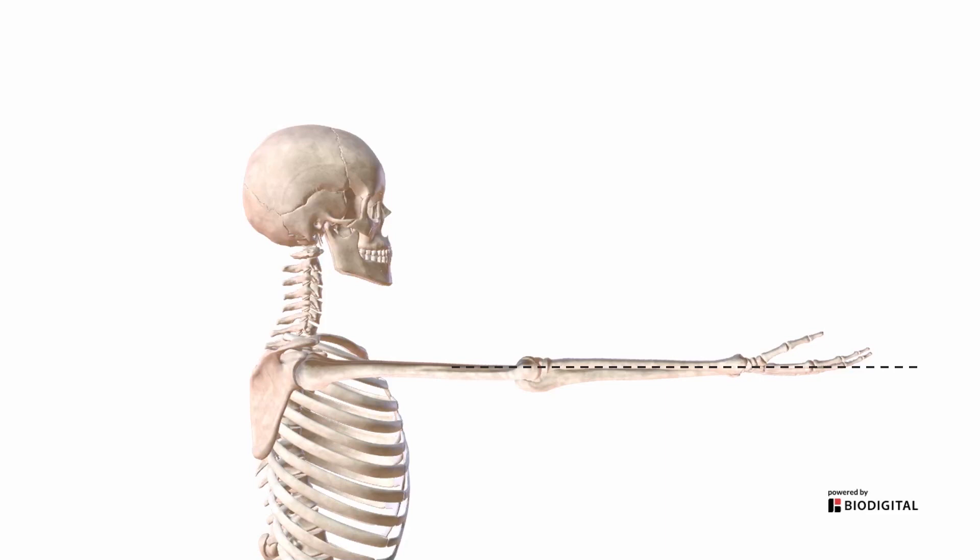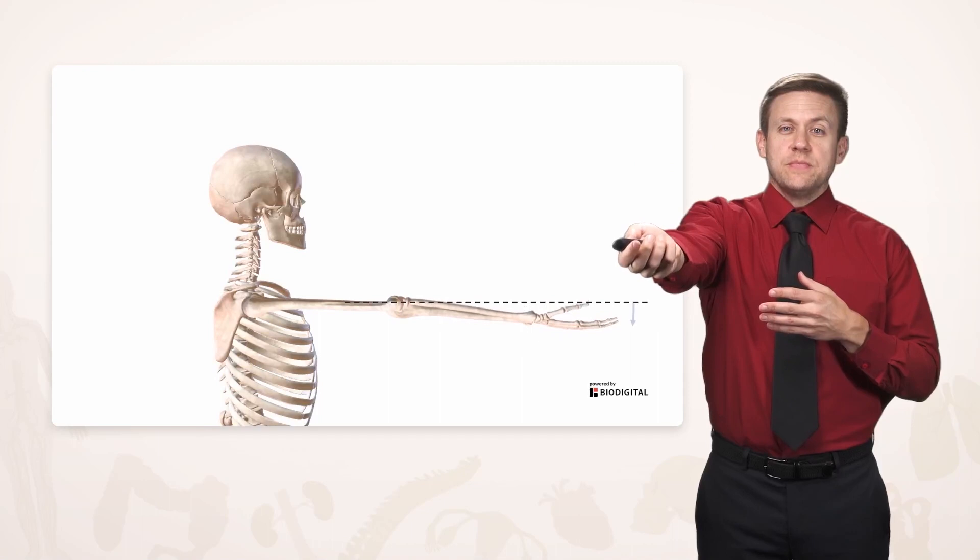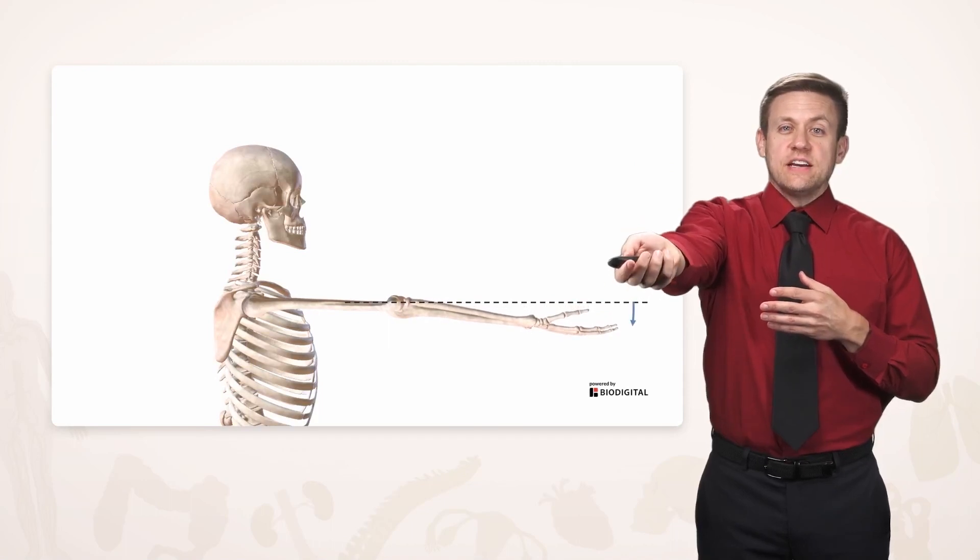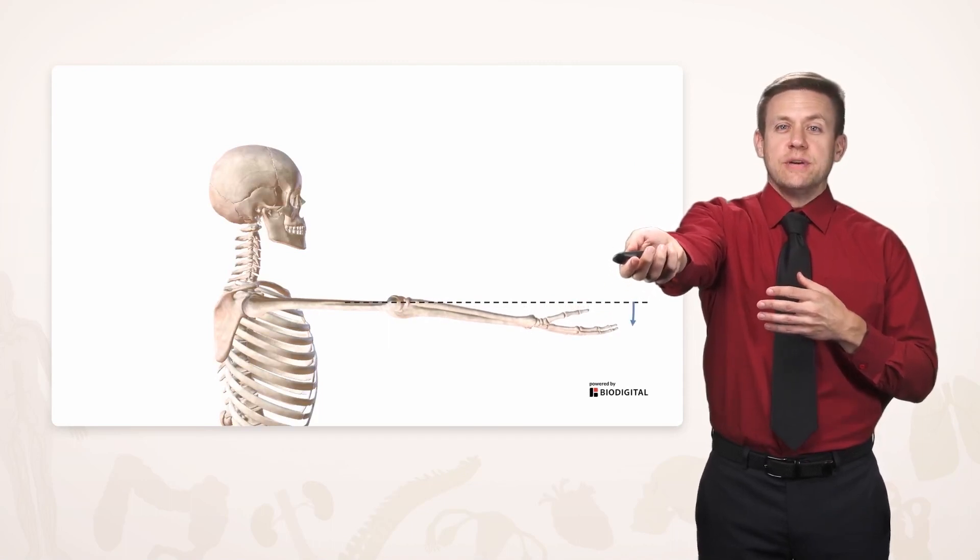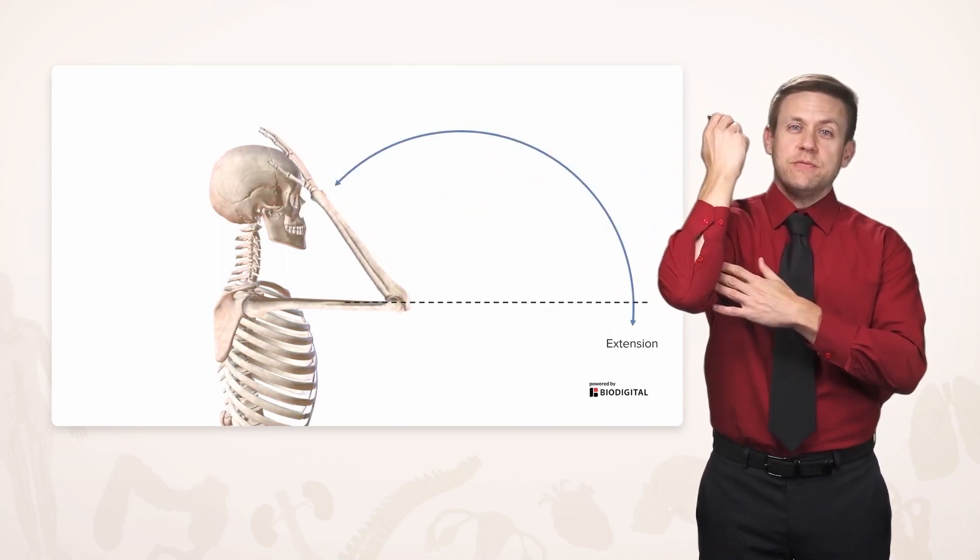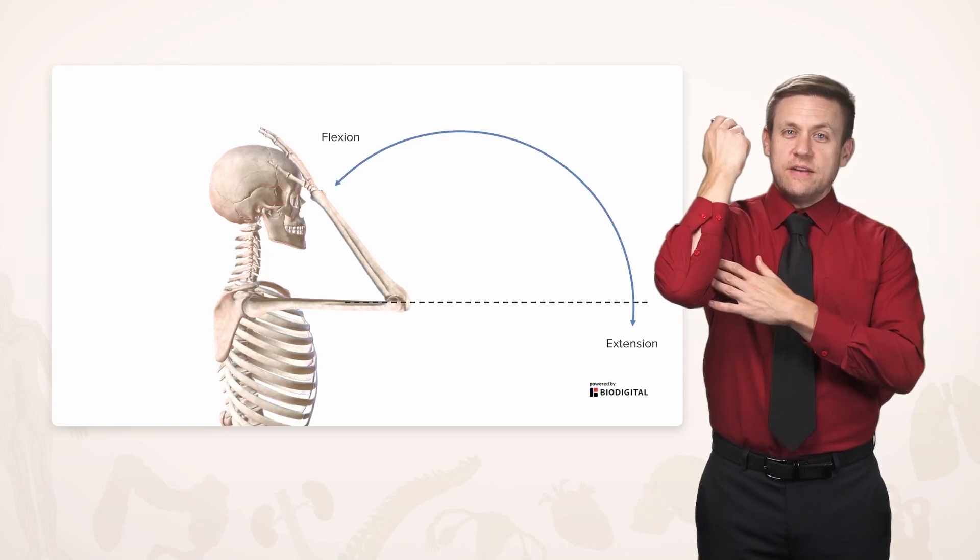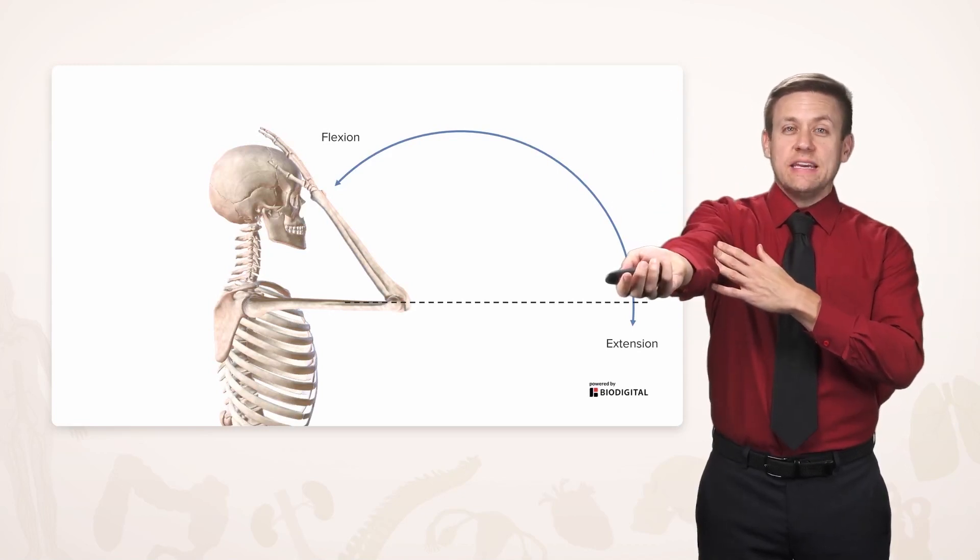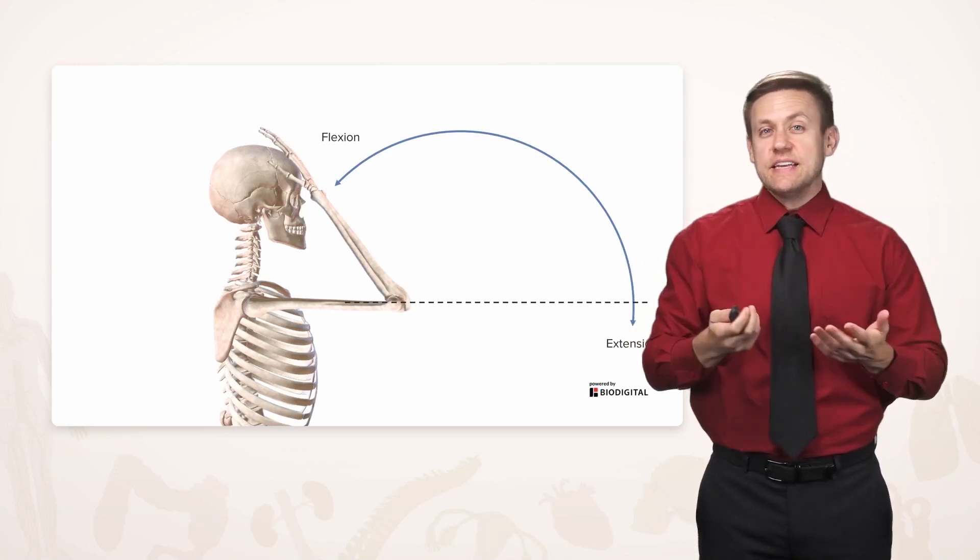At other joints, especially the elbow or the knee that act like hinges, that brings us to flexion and extension. And at these hinges, the angle of the hinge either increases or decreases. So, for example, if we were to increase the angle at a hinge joint, we would have extension. And if we were to decrease that angle, that would be flexion. And again, if we were to go back to a straight arm, we'd be increasing that angle again, it would be extension again.